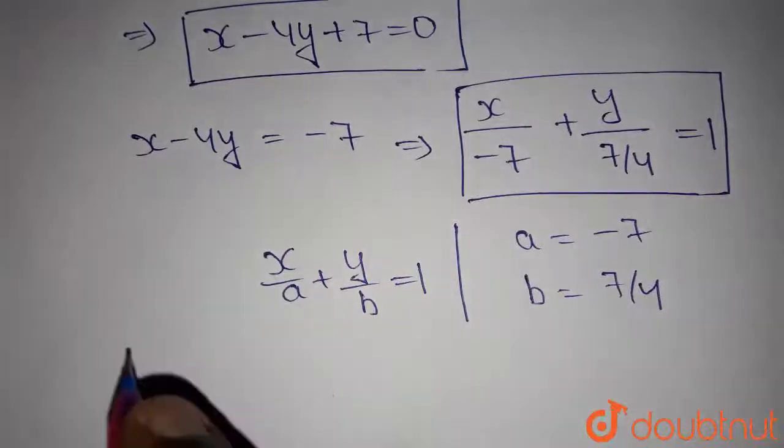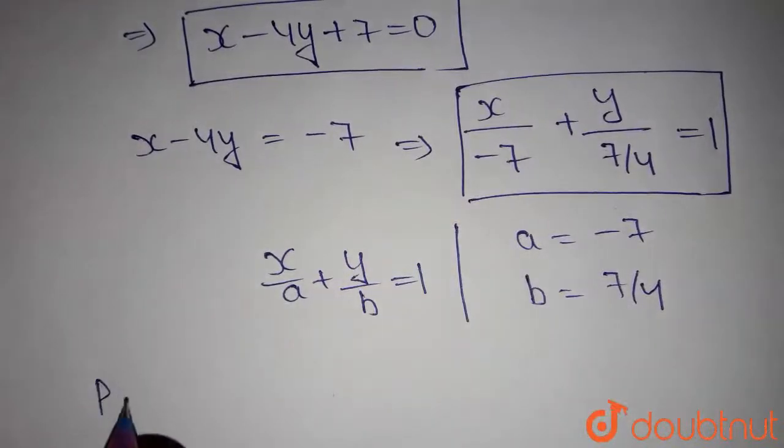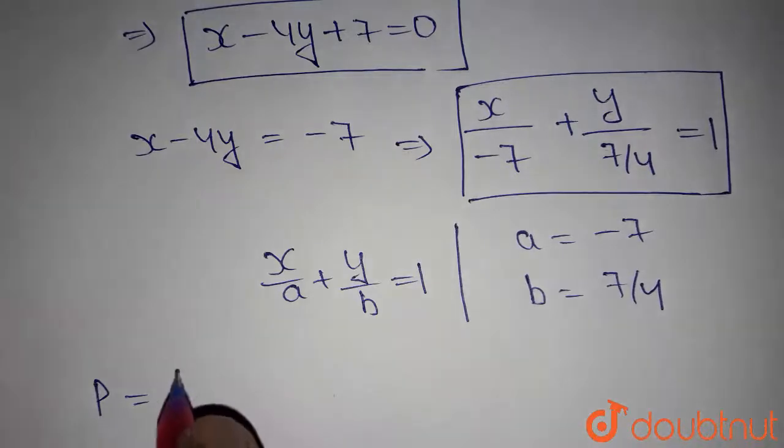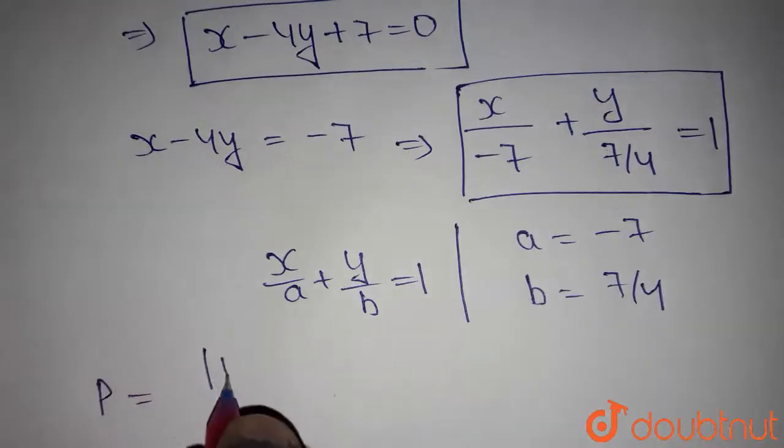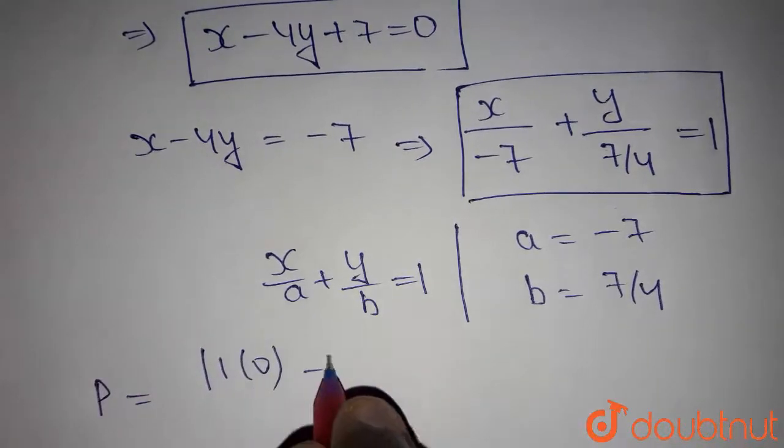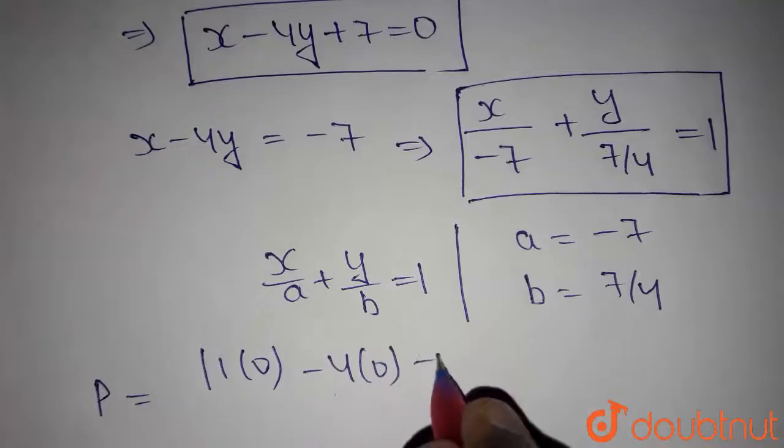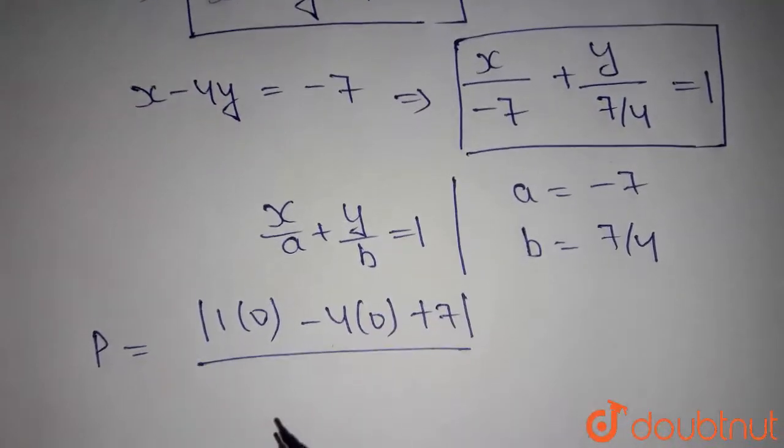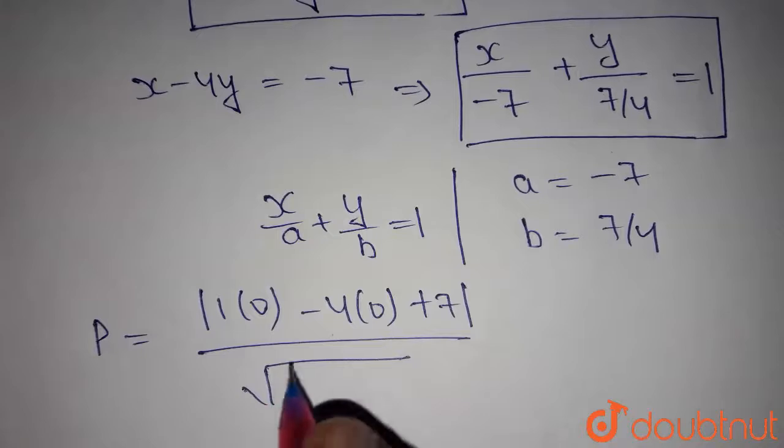Now, we have to find the distance p which is nothing but perpendicular distance of origin to this line. Which is given by 1 into 0 minus 4 into 0 plus 7 modulus divided by root over x coefficient square